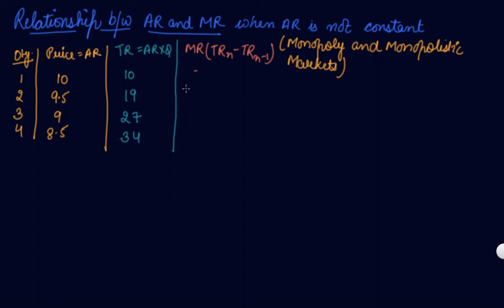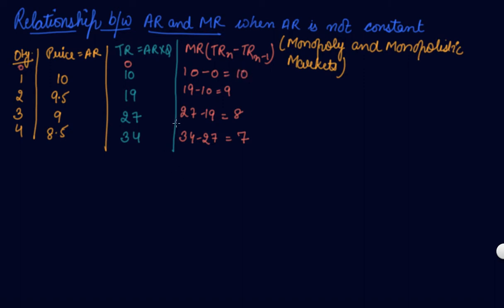We can also calculate MR from this. MR equals TR(n) minus TR(n-1). So 19 minus 10 gives you 9, 27 minus 19 gives you 8, and 34 minus 27 gives you 7. At unit 0, TR would be 0, so MR is 10 minus 0, which is 10.